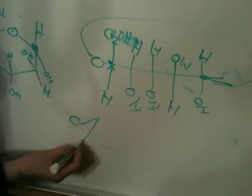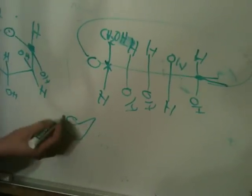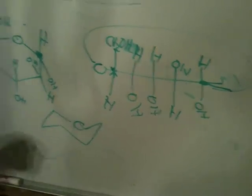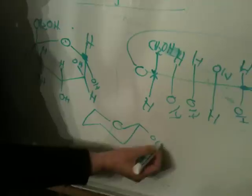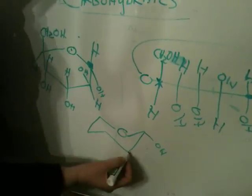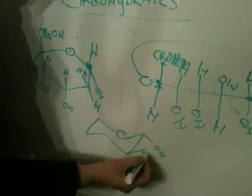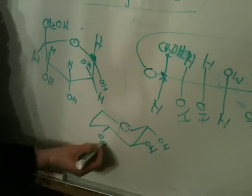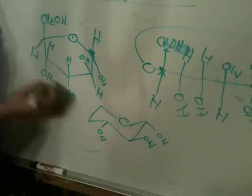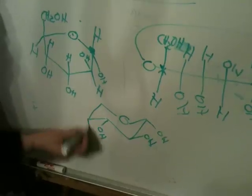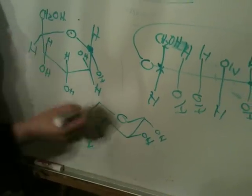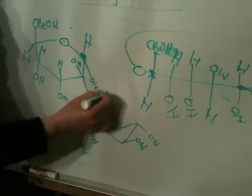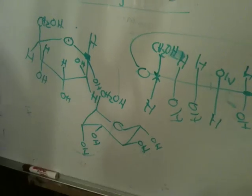And then this would be the CH2OH. If you took this particular sugar and put it in a chair, you would draw a chair — it would not necessarily be the chair. This OH would be in the down equatorial position. This OH is in the up equatorial position. This one's in the down equatorial position. This one would be in the down axial position. And this would be in the up axial position.